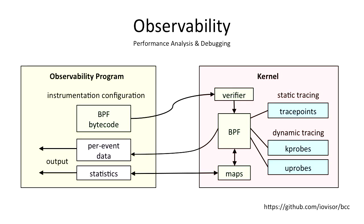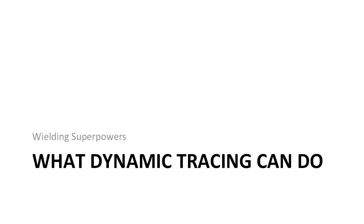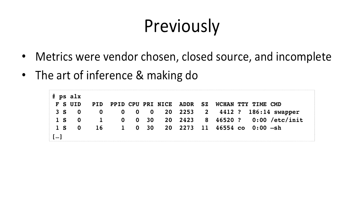And then observability, which is what I've been focusing on. And it can instrument sources, not just static trace points, but also the dynamic tracing: kprobes and uprobes, which have been in the kernel for a while now. Now I get excited about dynamic tracing because it allows us to do so much. And previously, metrics, as a performance engineer, metrics were vendor-chosen and closed source and incomplete.